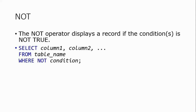The NOT operator displays a record if the condition is NOT true. For example, if we want to display all students not in class BS — meaning the class does not exist as BS — we use the NOT feature to exclude those records.